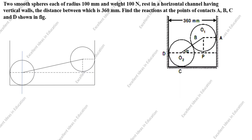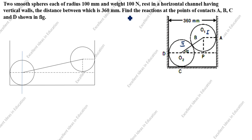Hi students, welcome to my channel 'Excellent Ideas in Education'. Today we are going to solve this engineering mechanics problem: two smooth spheres, each of diameter 100mm and weight 100 Newtons, resting in a horizontal channel having vertical walls. The distance between the walls is 360mm. Find the reaction at the points of contact A, B, C, and D.